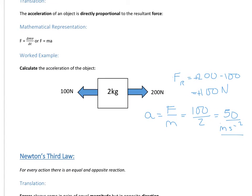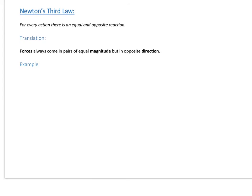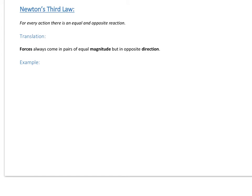Then there's the third law. What the third law says is: for every action, there's an equal and opposite reaction — which sounds utterly meaningless. It means that forces always come in pairs. When a force acts on something, there's always an equal and opposite force coming back in the opposite direction.